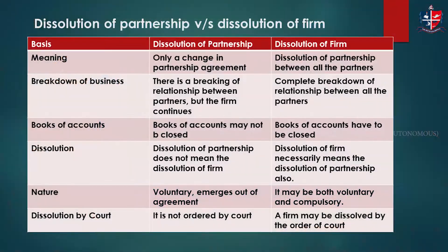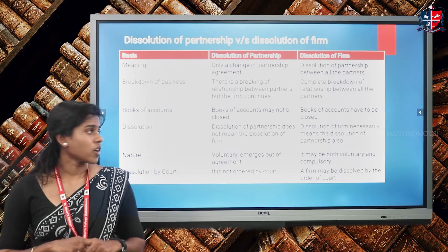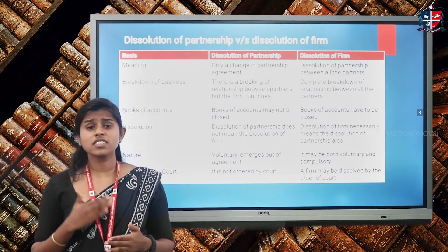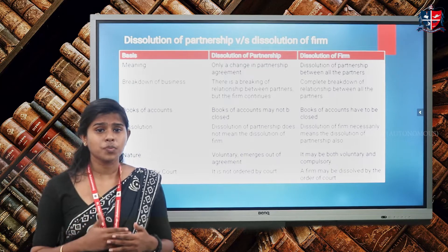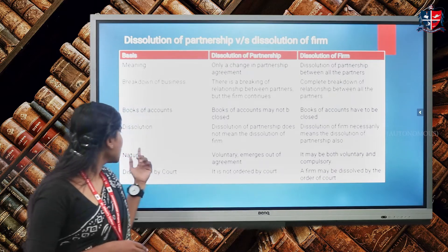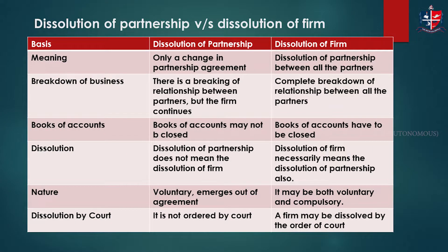Regarding books of accounts: in dissolution of partnership, the books may not be closed, as it is not compulsory for the company to close them — the firm may or may not close the books. While in the case of dissolution of firm, the firm has to close the books of accounts, since it is a complete and permanent winding up. Dissolution of partnership does not mean the dissolution of firm. But dissolution of firm necessarily means the dissolution of partnership also, because the relationship between all the partners is breaking.